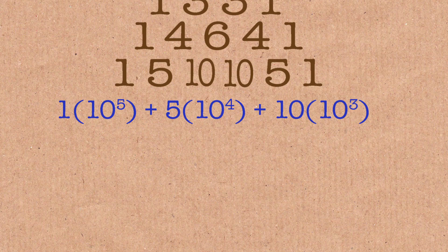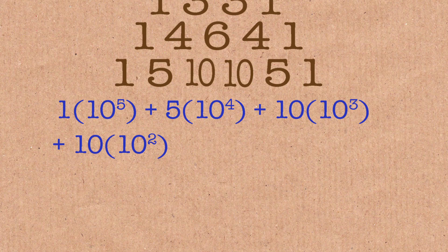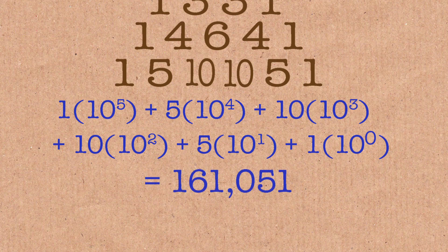We do one times ten to the five plus five times ten to the four plus ten times ten to the three plus ten times ten squared, plus five times ten to the one and one times ten to the zero, and this is 11 to the five. So it is 11 to the five, it is 11 to the five, it's just hiding.